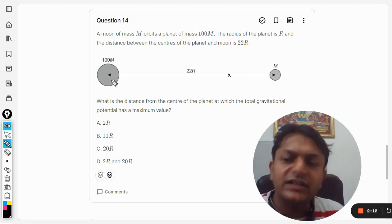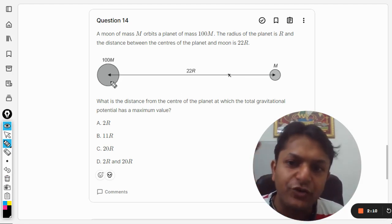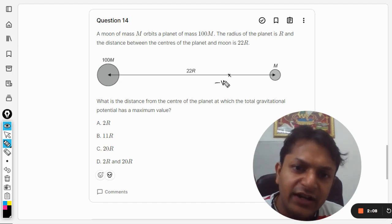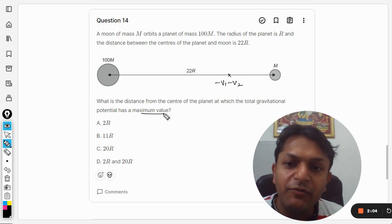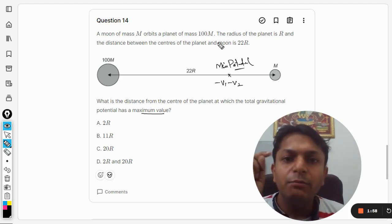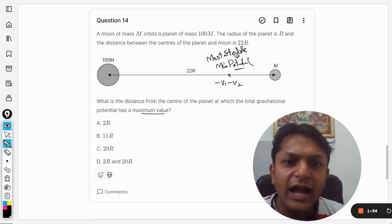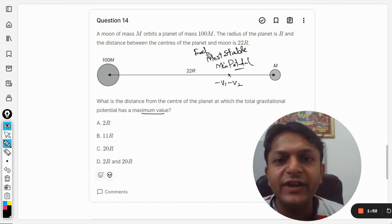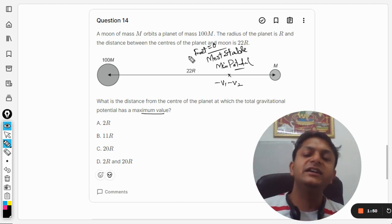You see, the gravitational potential is always negative. Try to understand: the Earth has a negative potential and moon also has a negative potential. So maximum value means minimum potential. Minimum potential means most stable, and most stable means the F_net is equal to zero.